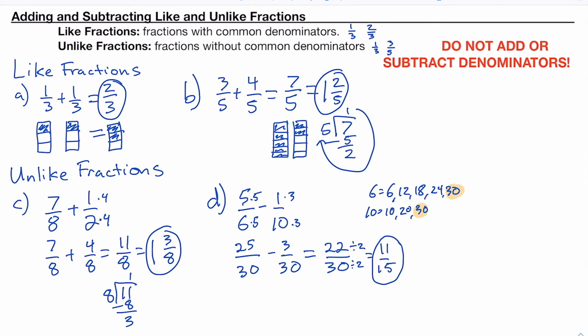So adding and subtracting like and unlike fractions is not too hard. If they're like, you just add or subtract the numerator. If they're unlike, you have to make common denominators and then add or subtract the numerator. And always don't forget to turn any improper fractions into mixed numbers or simplify any fractions that can be simplified. Good luck.